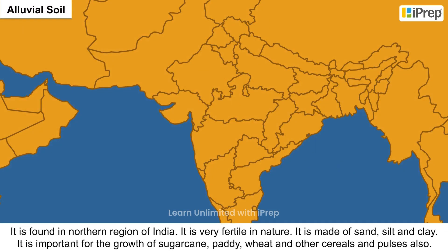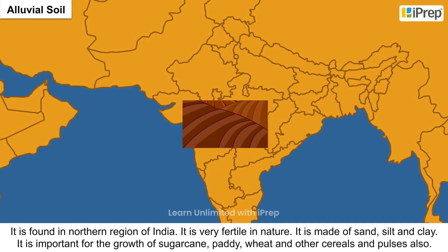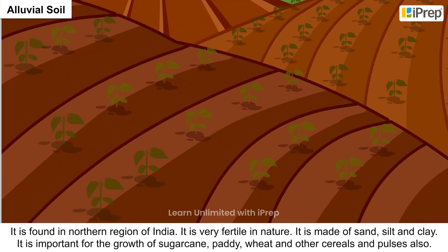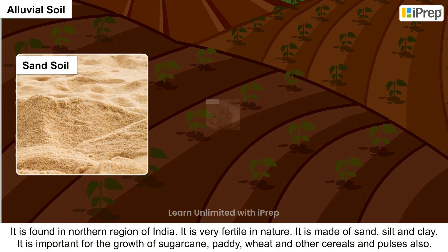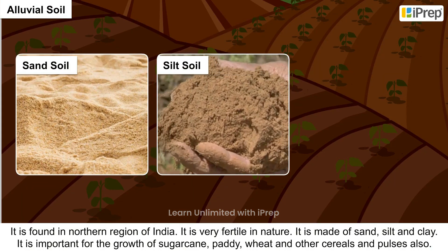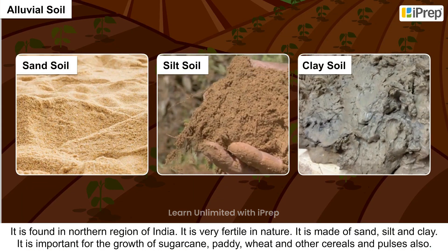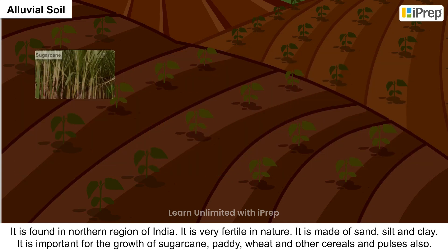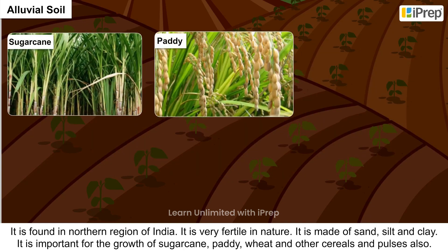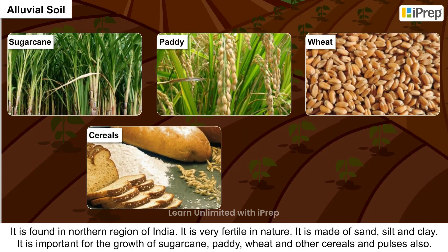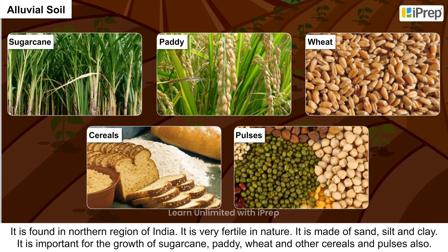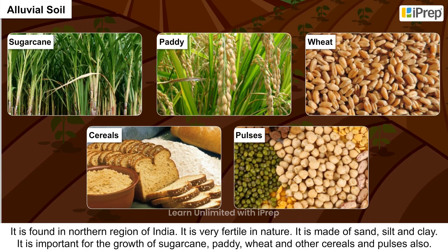Alluvial soil is found in the northern region of India. It is very fertile in nature and is made of sand, silt, and clay. It is important for the growth of sugarcane, paddy, wheat, and other cereals and pulses.